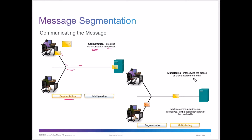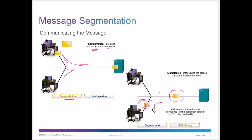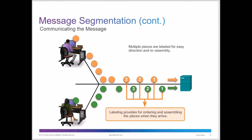We also have a term called multiplexing, where we interleave pieces as they go across the network — the media. Multiple communications are interwoven together, giving each user a part of the bandwidth. On a network, if you're doing wire sniffing or monitoring, you'll see multiple messages from multiple users or nodes going across the network, all sharing that same network.